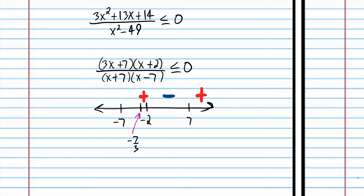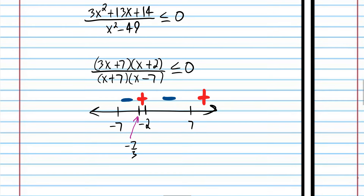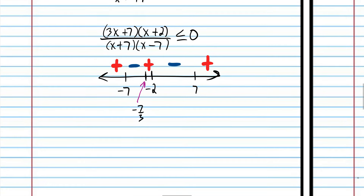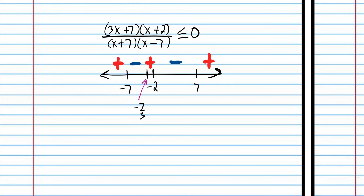Let's plug in negative ten: we get a negative times a negative divided by a negative times a negative, which is positive divided by positive, which is positive. We could use multiplicity to help us here, but that complicates things quite a bit. So now we can write the graphical solution. It says less than or equal to, so negative two and negative seven thirds are going to be filled-in dots. But seven and negative seven make the expression undefined — open dots — because they make the inequality nonsensical.